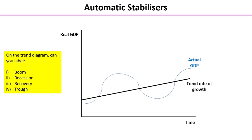We're going to start exploring the automatic stabilisers or automatic policy in a bit more detail. On the screen there you can see a diagram indicating the economic cycle. Quick starter task: can you label boom, recession, recovery, and trough?